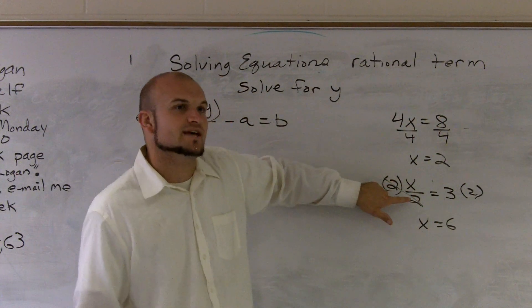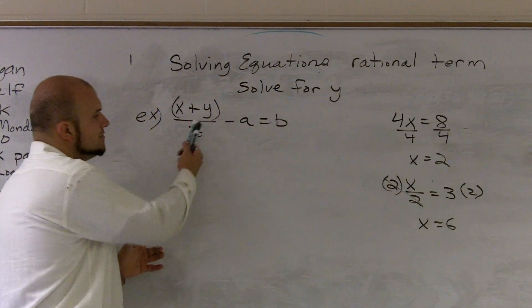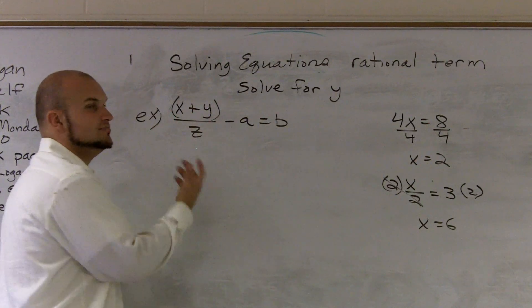And then on here, if I had x divided by 2, the inverse operation would be multiplication. So you multiply by 2. On this problem, we have x plus y divided by z, so our inverse operation is going to multiply.